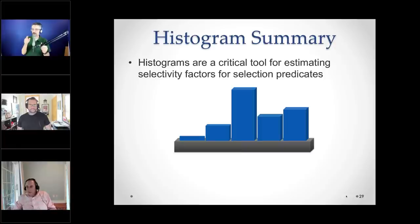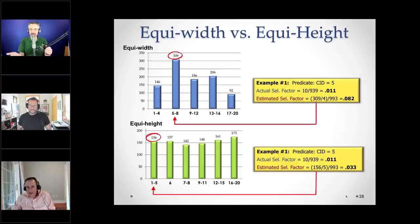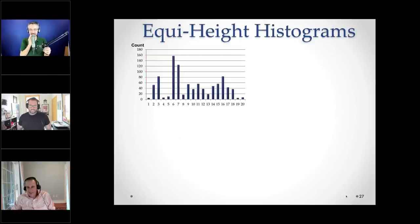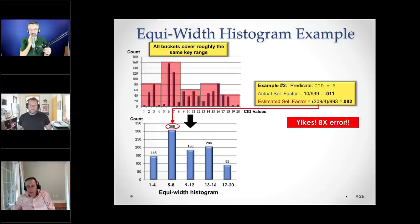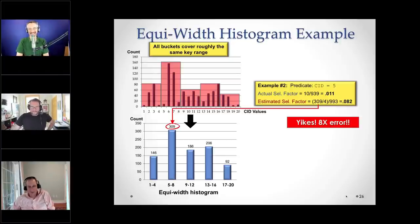Frank Gill thinks he saw the math error — this slide shows 993 as the denominator, and the previous one shows 939. Yes, very good! Frank Gill wins a prize. I'll tell my wife somebody found it again. I'll try to fix this in case I ever give this talk again.